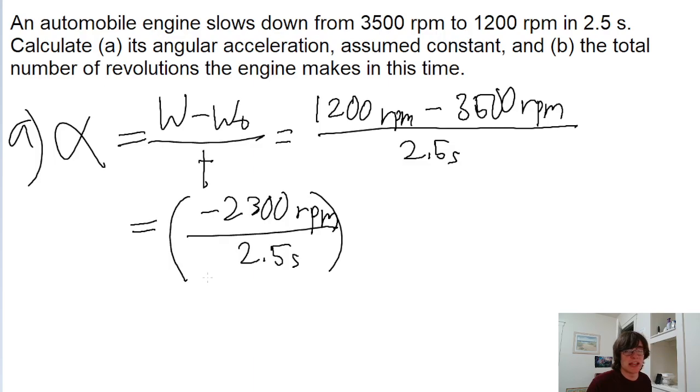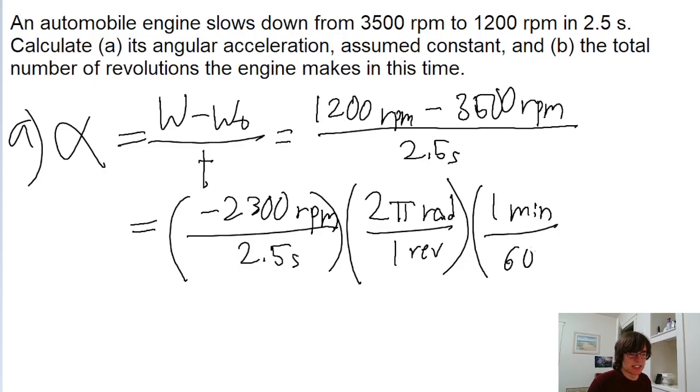We usually represent angular speed with radians per second instead of revolutions per minute. So we'll do a chain link conversion. We'll convert from revolutions into radians by multiplying by 2π radians for one revolution. Then we'll convert from minutes into seconds by dividing by 60 seconds.